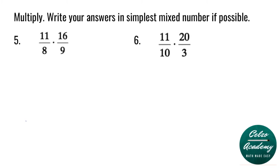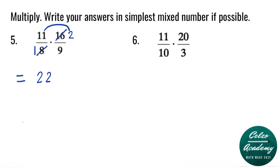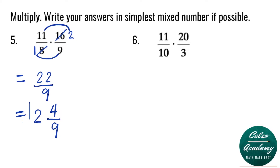Question number 5: 11 over 8 times 16 over 9. We can simplify 16 over 8, which is 2 over 1. Now multiply 11 times 2 — that's 22 — and the denominators 1 and 9 — that is 9. Converting to a mixed number: how many 9s go into 22? 2 times — 2 times 9 is 18, remainder 4. So the answer is 2 and 4 ninths.